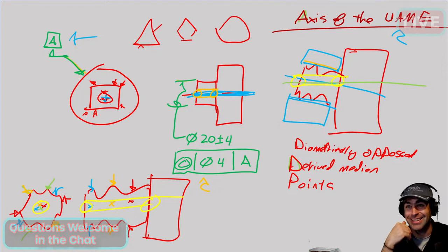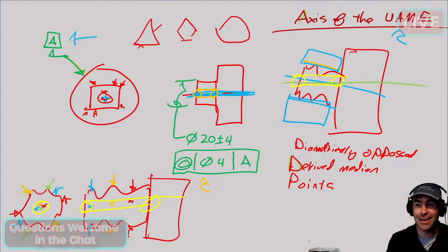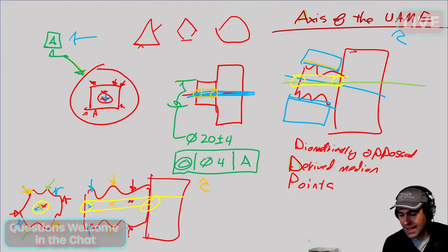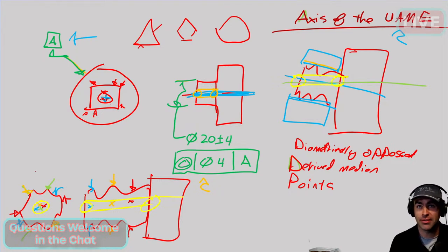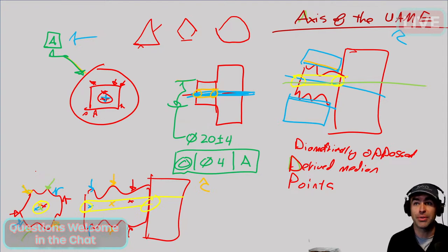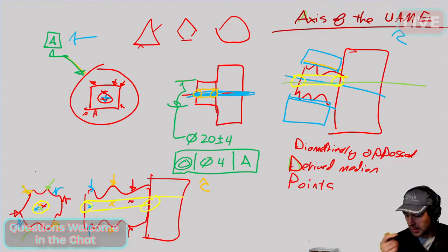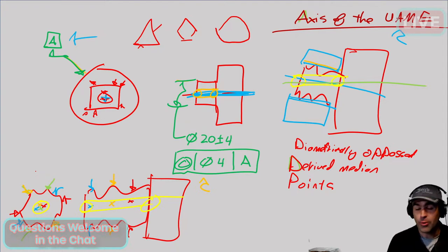They got rid of concentricity in the 2018 version of Y14.5. ISO has the concentricity symbol, but it doesn't mean the derived median points business — it's totally different, basically just meaning what position means in ISO.